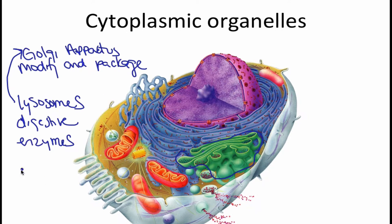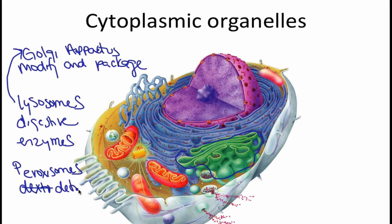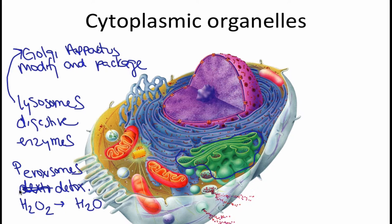There's another vesicle similar to a lysosome called peroxisomes. Peroxisomes are also used for detoxification — their purpose is to detoxify substances such as alcohol or formaldehyde. They break down substances into free radicals and form H2O2, which is hydrogen peroxide. Since hydrogen peroxide is harmful to the cell, another enzyme called catalase breaks it down into water. So peroxisomes are used for detoxification, breaking down molecules into hydrogen peroxide, which is then broken down into water.